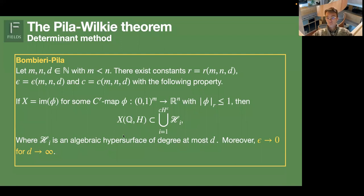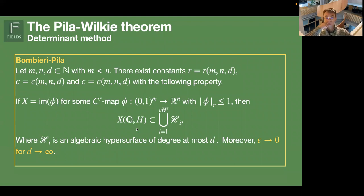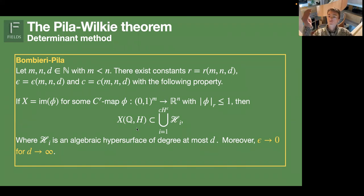Then you can indeed find hypersurfaces of the desired quantity such that each rational point on X lies on at least one of these hypersurfaces. The key point of this proposition is that if you let the degree of the hypersurfaces grow, such a hypersurface can contain more rational points — the number of points determines the hypersurface. So if you take d large, then epsilon becomes arbitrarily small, just as you want in the Pila-Wilkie theorem.